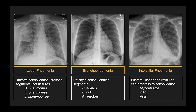When most people start out with radiology they tend to think of pneumonia as looking like lobar pneumonia. But in real practice, most cases of community-acquired pneumonia are going to be bronchopneumonia, and probably the second most common is interstitial pneumonia. Lobar pneumonia I don't see very commonly from patients coming into the emergency room or their doctor's office.